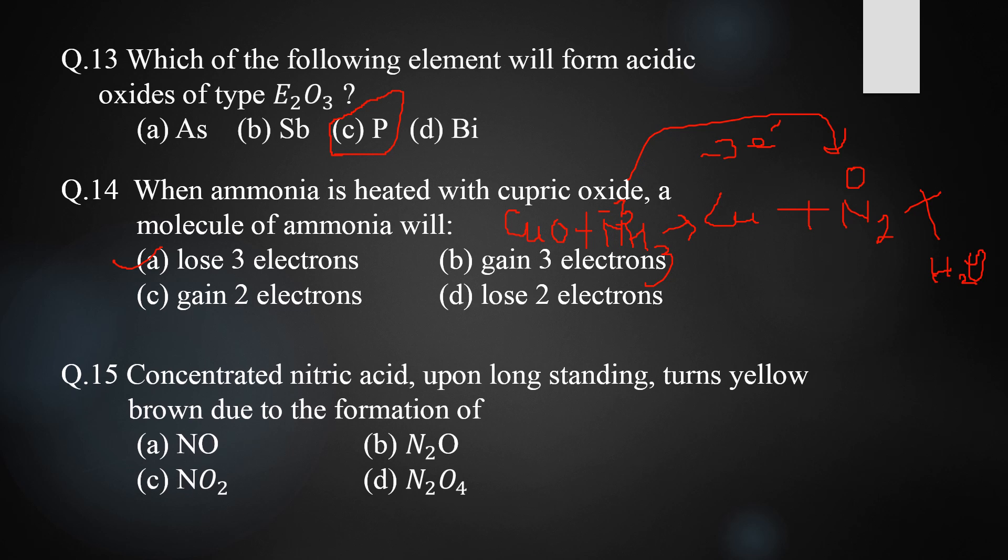Question fifteen: concentrated nitric acid upon long standing turns yellow-brown due to the formation of which compound? Options are NO, N2O, NO2, and N2O4. The correct answer is NO2 (nitrogen dioxide). On standing, HNO3 decomposes to form NO2 and water. NO2 is yellow-brown in color and acts as an impurity, giving concentrated nitric acid its yellow-brown color.